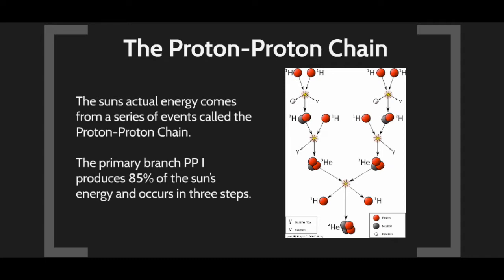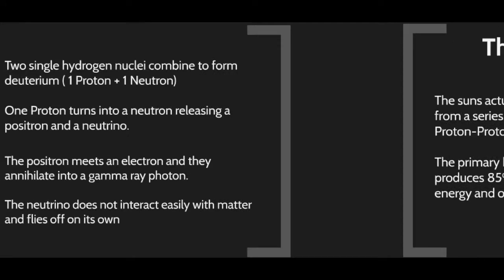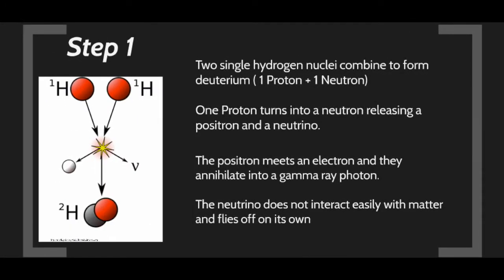85 percent of the Sun's energy comes from the proton-proton chain, which happens in three steps. In step one, two single hydrogen nuclei move around rapidly in the core under tremendous pressure and density. On many occasions these protons bump into each other. They both have positive charge and repel each other, so a force stronger than the electromagnetic force is needed — the strong nuclear force.